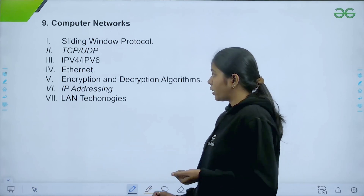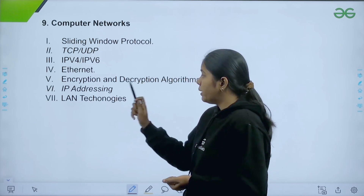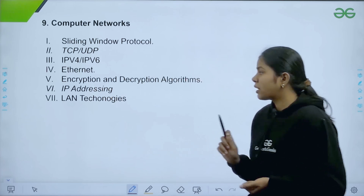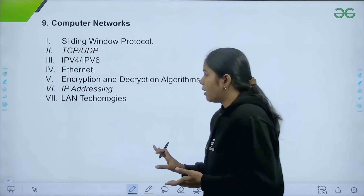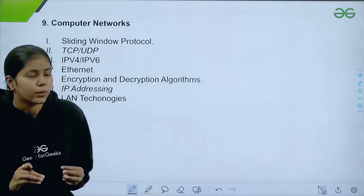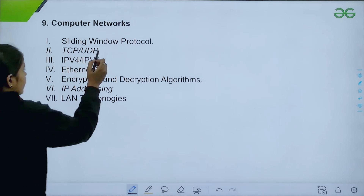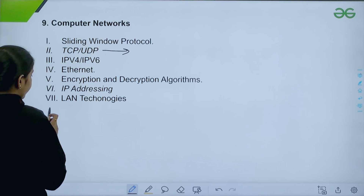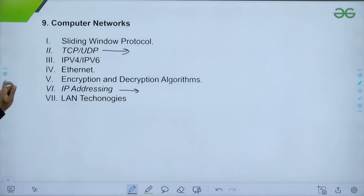The next subject is Computer Networks. The eight important topics are sliding window protocol, TCP/UDP, IPv4, IPv6, Ethernet, encryption and decryption algorithms, IP addressing, and LAN technologies. The maximum weightage topics are TCP/UDP and IP addressing — these two topics carry the highest weightage in Computer Networks.